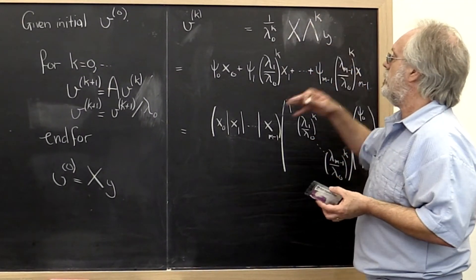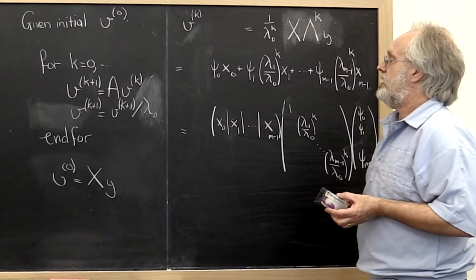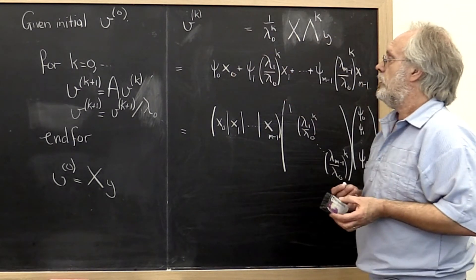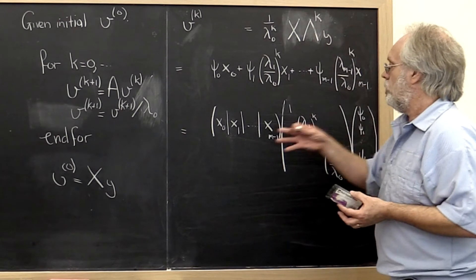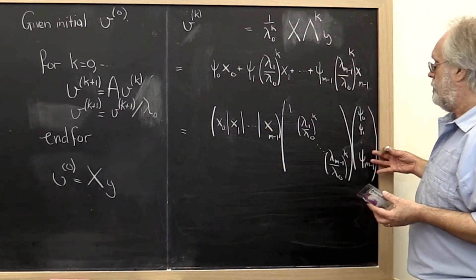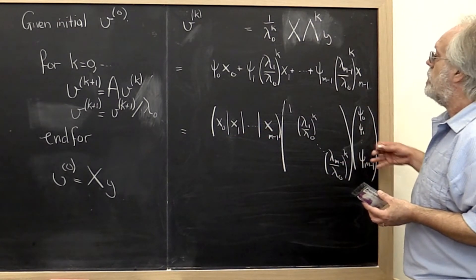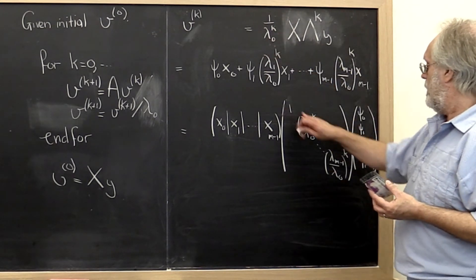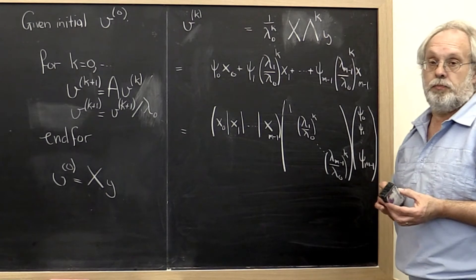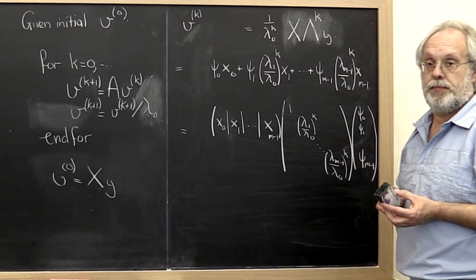Now this alternatively can be written as a linear combination of the eigenvectors of x. Or we can write it in matrix form as follows where we have taken this 1 over lambda 0 to the kth power and incorporated it into this diagonal matrix lambda.